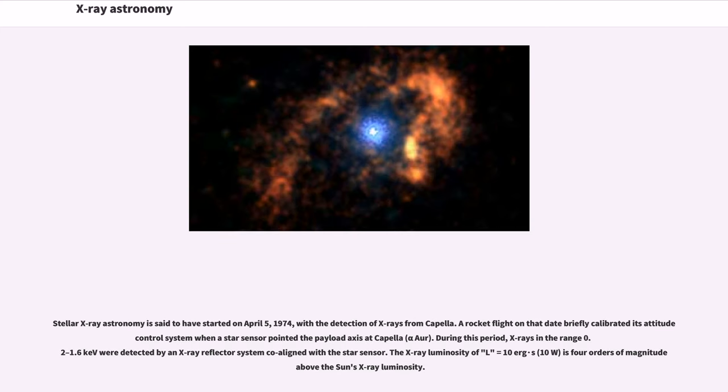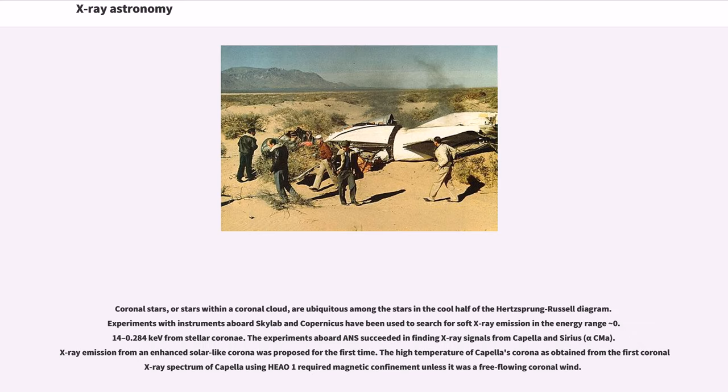Stellar X-ray astronomy is said to have started on April 5, 1974, with the detection of X-rays from Capella. During this period, X-rays in the range 0.2 to 1.6 keV were detected by an X-ray reflector system co-aligned with a star sensor. Coronal stars are ubiquitous among the stars in the cool half of the Hertzsprung-Russell diagram. Experiments aboard Skylab and Copernicus have been used to search for soft X-ray emission. The experiments aboard ANS succeeded in finding X-ray signals from Capella and Sirius.